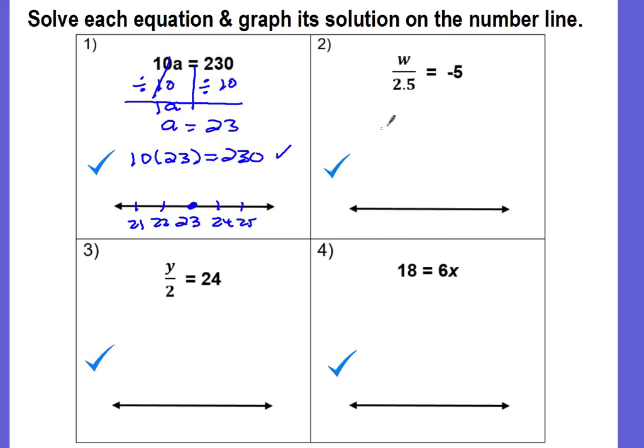Okay, the next example, number 2. This is W is being divided. Remember this fraction bar means division. So let's go ahead and draw our line. The opposite or inverse operation of division is multiplication. So instead of dividing by 2.5, we're going to multiply by 2.5. And the properties of equality say what you do to one side, you have to do to the other. So we're going to multiply the negative 5 by 2.5. And now we're ready to do the math.